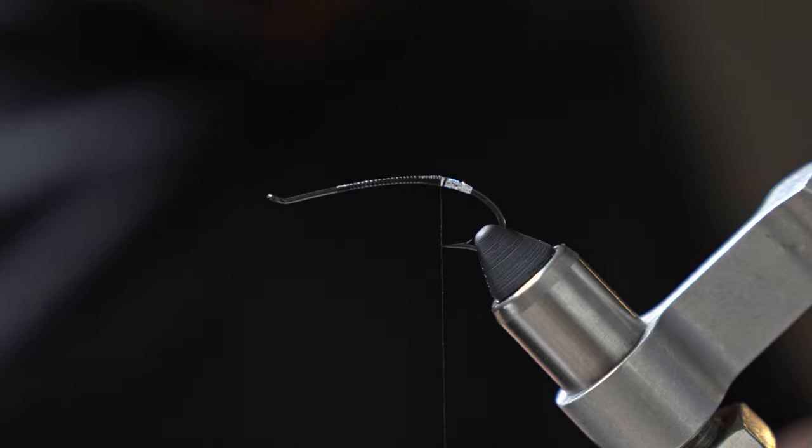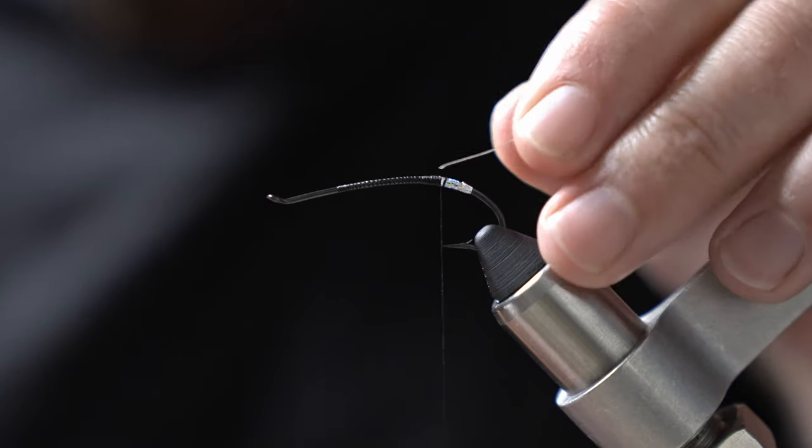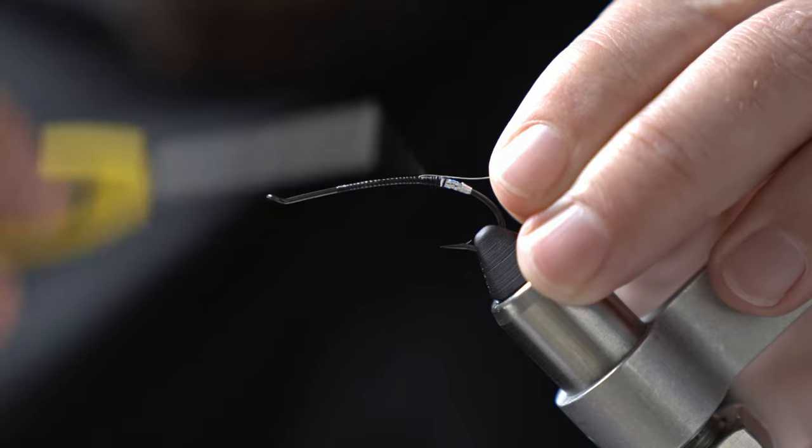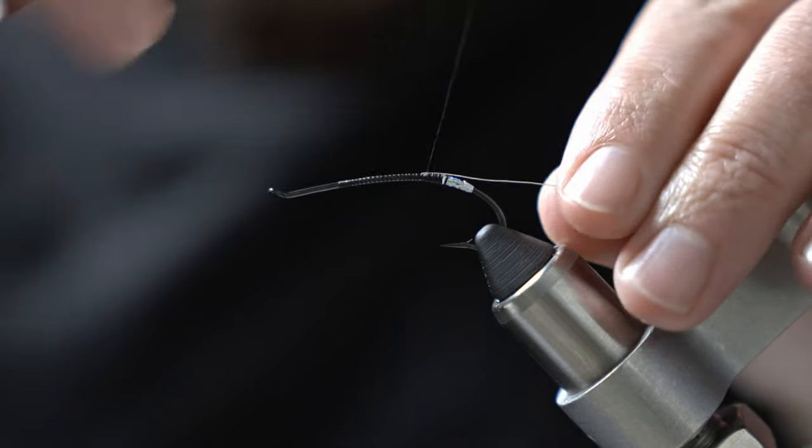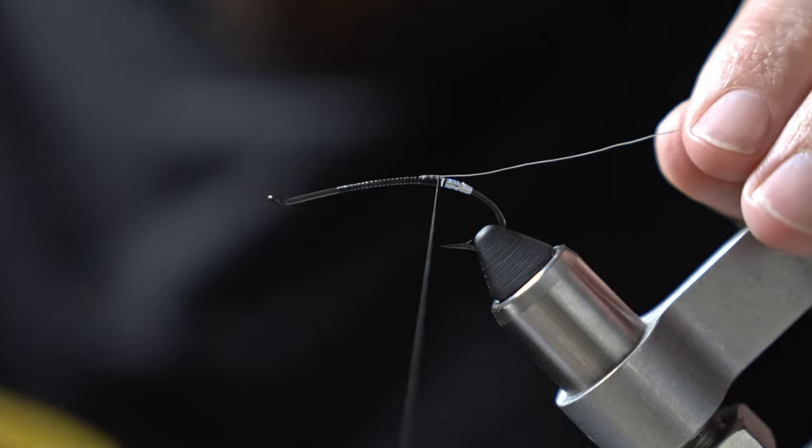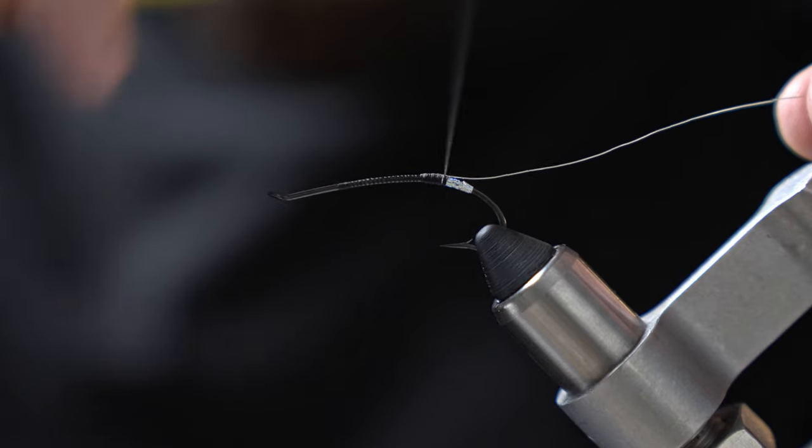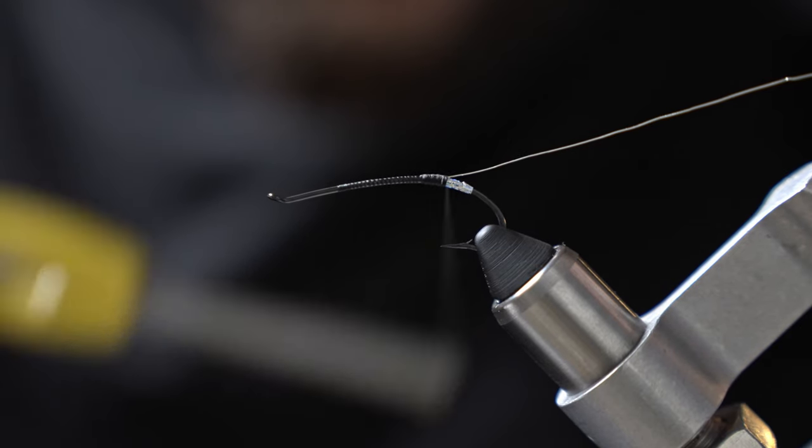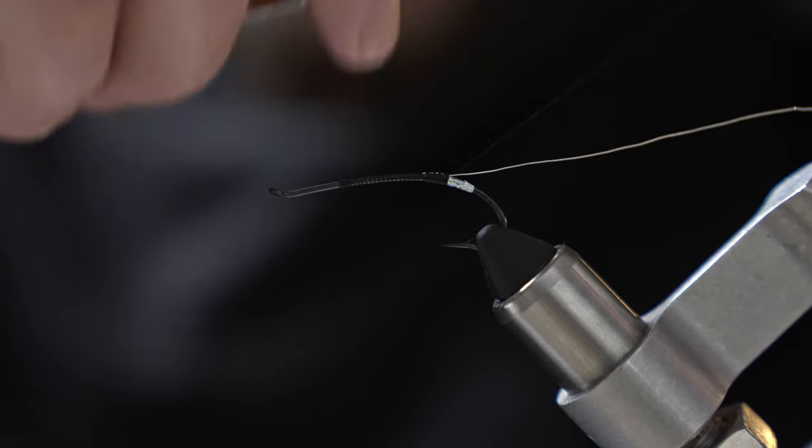And from there we're going to throw in some silver wire. This is small but honestly medium may even look better for this type of fly or this size of fly. Let's go ahead and wrap that in just right at the point of the hook again.